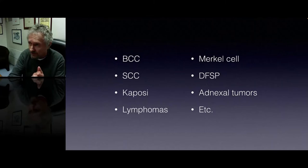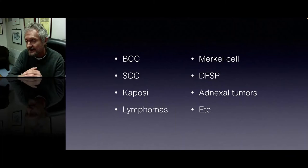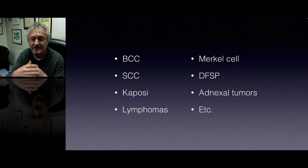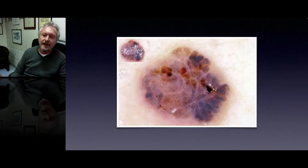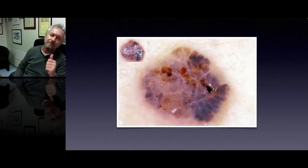But of course, it's not only concerning basal cell and squamous cell carcinomas. We know that there are other malignant skin tumors like lymphomas, primary cutaneous lymphomas, Merkel cell carcinoma, dermatofibrosarcoma protuberans, and malignant neck cell tumors. So we have a large variety of malignancies, but let's keep concentrated on the two most common non-melanoma skin cancers, namely basal cell carcinoma and squamous cell carcinoma.